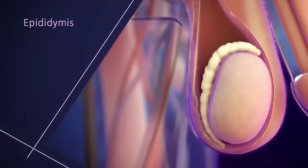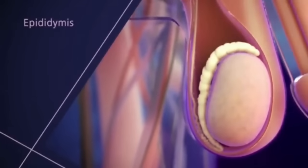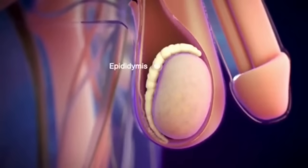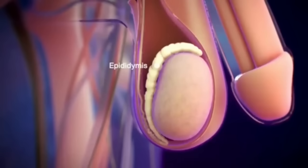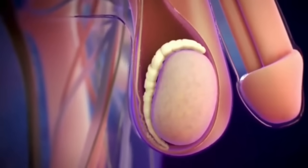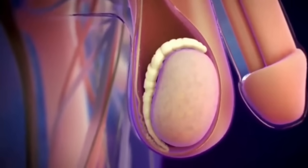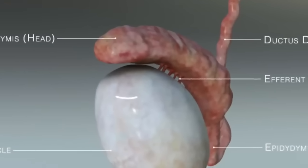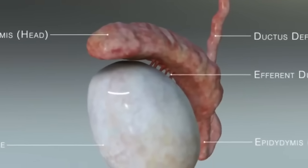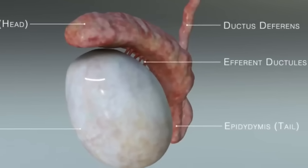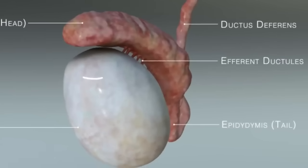Epididymis. The epididymis is a whitish mass of tightly coiled tubes curved against the testicles. It acts as a storage place for sperm before they enter the vas deferens, which is a tube that carries sperm from the testis to the urethra.